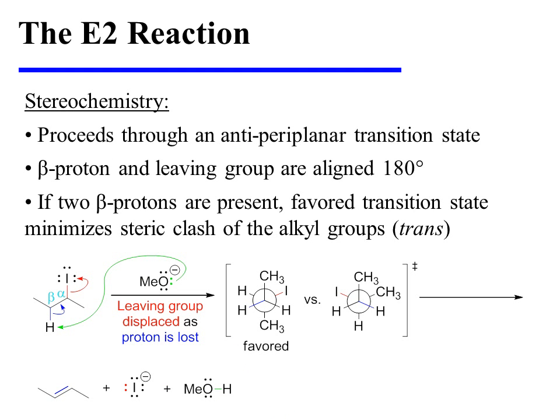The E2 reaction proceeds through an anti-periplanar transition state, meaning that the beta proton and the leaving group must be aligned 180 degrees relative to one another. If two beta protons are present, the favored transition state will minimize the steric clash between the alkyl groups, leading to a trans product.